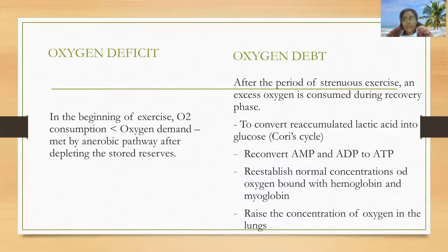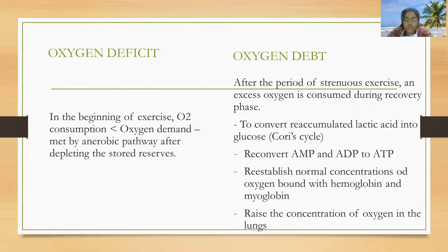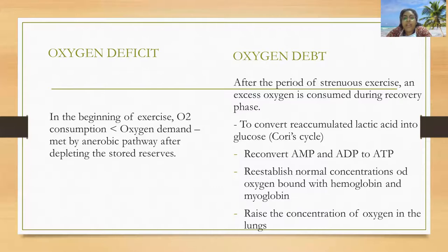Oxygen debt is the excess oxygen consumed during the recovery phase after a period of strenuous exercise. This excess oxygen is used to convert reaccumulated lactic acid into glucose via the Cori cycle, to convert AMP and ADP back to ATP, to reestablish normal oxygen concentrations bound with hemoglobin and myoglobin, and lastly to raise the concentration of oxygen in the lungs.